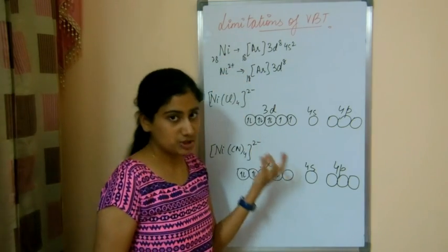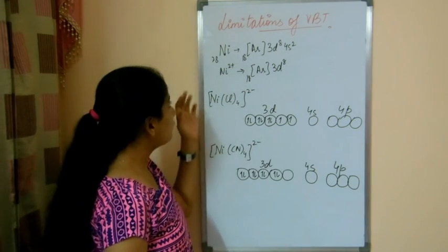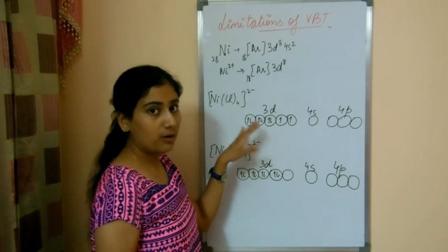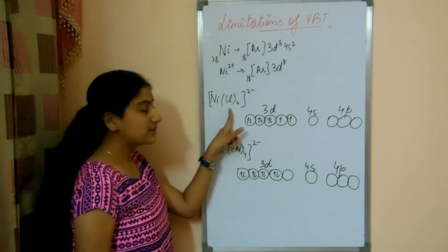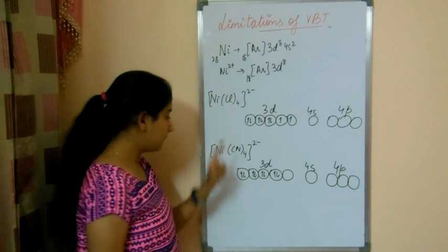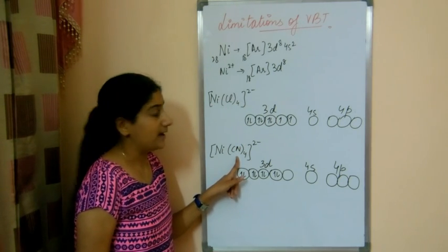Now we know that nickel is a transition atom and it's going to form coordinate compounds or complexes. The first complex is this with chloride ions. The other complex is this with CN negative ions.